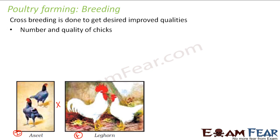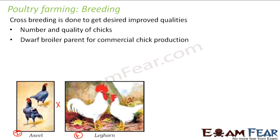The improved qualities from cross breeding include greater number of chicks and better quality chicks. The resulting dwarf broiler parent is used for commercial chick production — the smaller size of dwarf broilers helps in commercial selling.